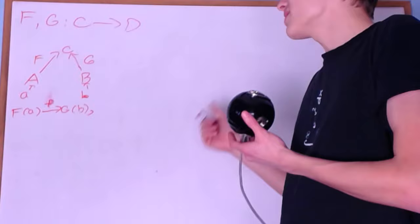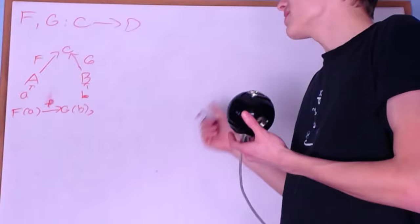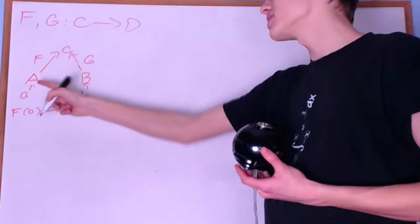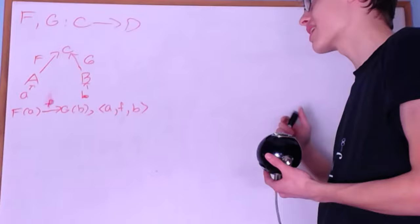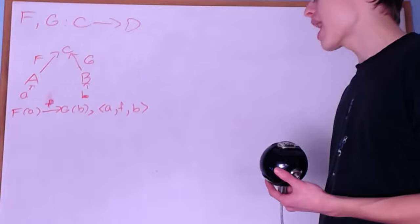To write this out concisely, I could write it as A — an object of A — then f, an arrow, and B — an object of B. This triple will represent what we're analyzing in a comma category. These triples are the objects of the comma category.